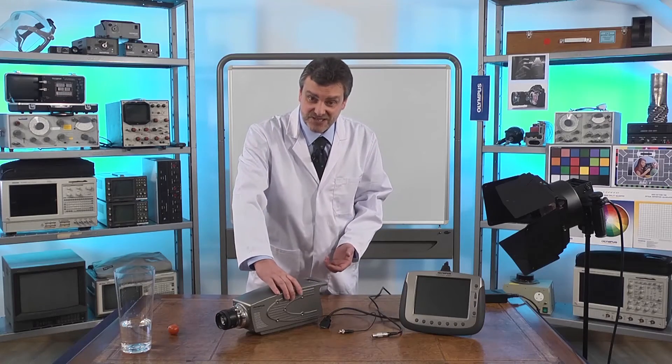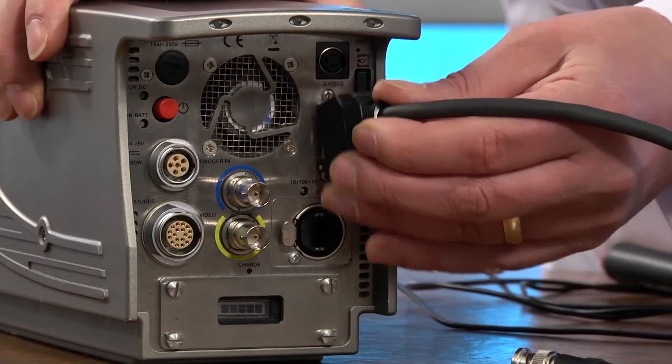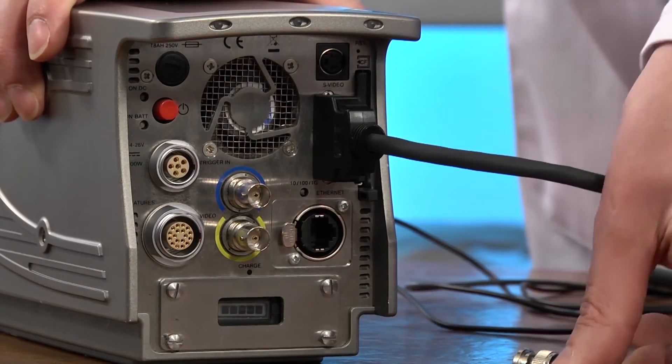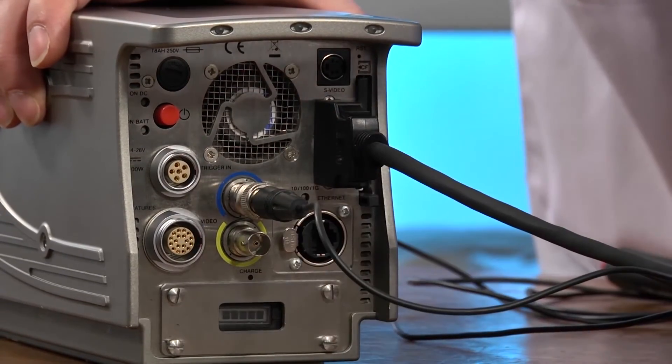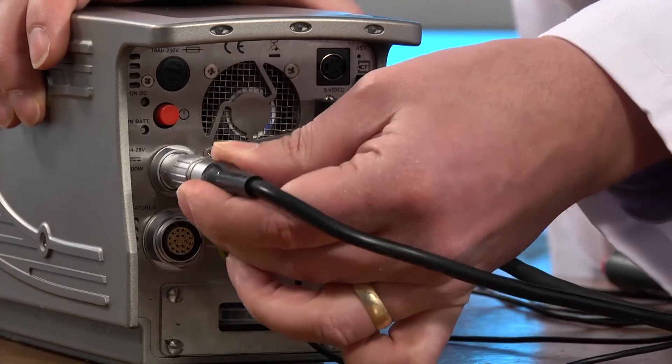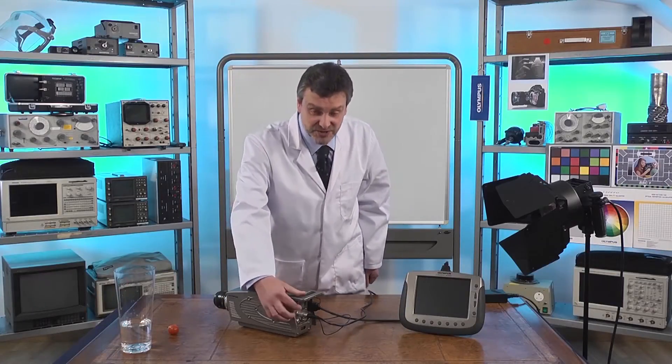Now I'll put on the connectors at the back of the camera. First the controller display unit, second the trigger and third the power connector. All I have to do now is switch the camera on.